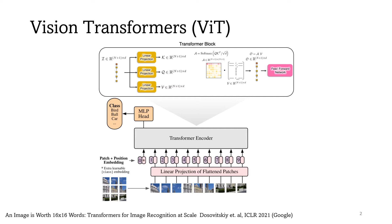Recently, vision transformers have achieved promising results in image and video classification tasks. A ViT model receives an input image, splits it into a set of non-overlapping patches, transforms those patches into a set of input tokens, and then passes those tokens through a set of transformer encoder layers. In the end, there is a classification head that performs the final classification.